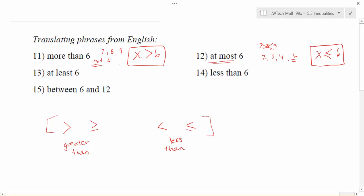If we're looking at a problem like at least six, well, at least six means that we want to think of things like seven, eight, or nine, things that are bigger. It's got to be six or bigger.